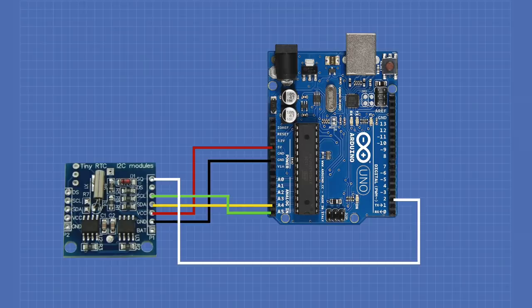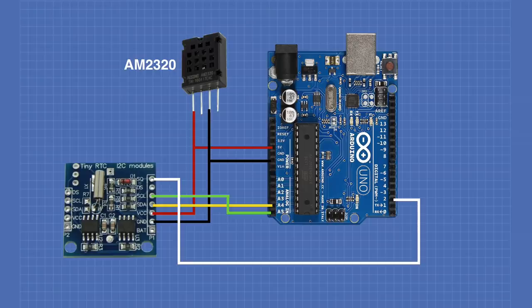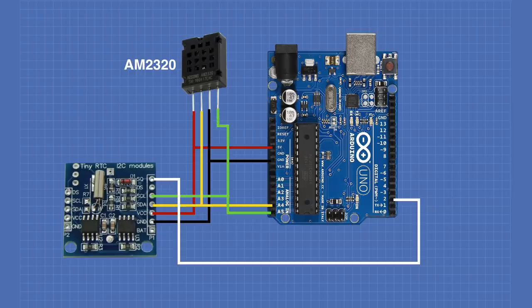We'll start with the same real-time clock and square wave interrupt circuit on pin 2, removing the LED and resistor. We're adding the AM2320 temperature and humidity sensor. The far left pin of the AM2320 is VCC, connected to the 5-volt line. The second from right pin is ground. The second pin from the left is SDA, connected to analog A4 or the SDA input. The remaining pin is the SCL clock line, connected accordingly.